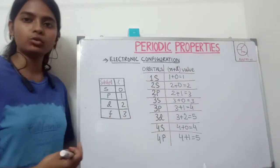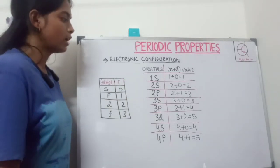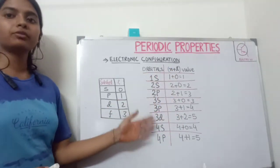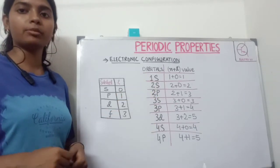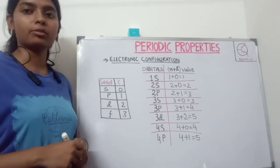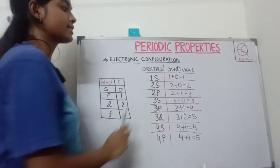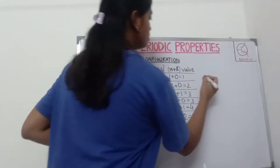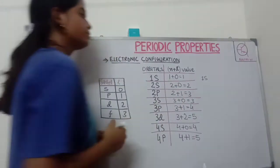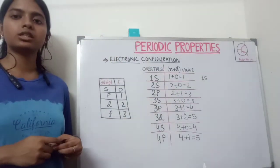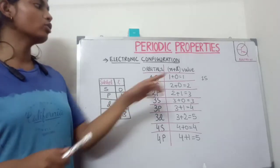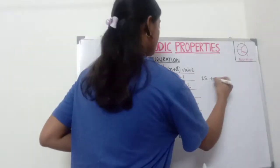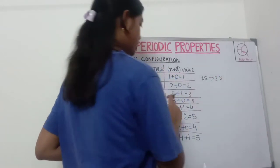Now we will compare the n plus l values and according to that we will find the arrangement of electrons in the orbitals. The n plus l value for 1s is the least, so first we will fill the 1s orbital, because n plus l is directly proportional to the energy of that orbital. The lesser the value of n plus l, the lesser will be the energy of that orbital. So first we fill 1s, then 2s, then 2p.